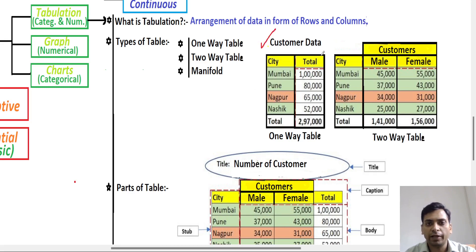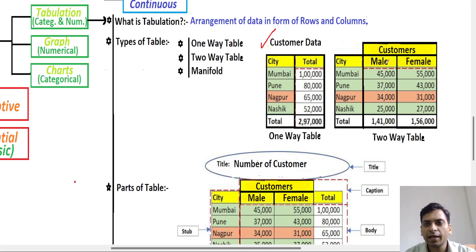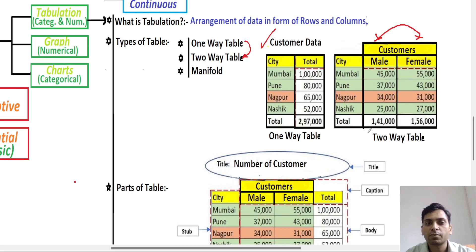In the one-way table, customer data for Mumbai, Pune, Nagpur, and Nasik shows only one numerical column — total customers. When we segregate this total column into male and female, it becomes a two-way table with two numerical columns. When we further segregate male and female into graduate, undergraduate, and postgraduate customers, this is considered manifold — three-way, four-way — because we are splitting data into multiple parts.